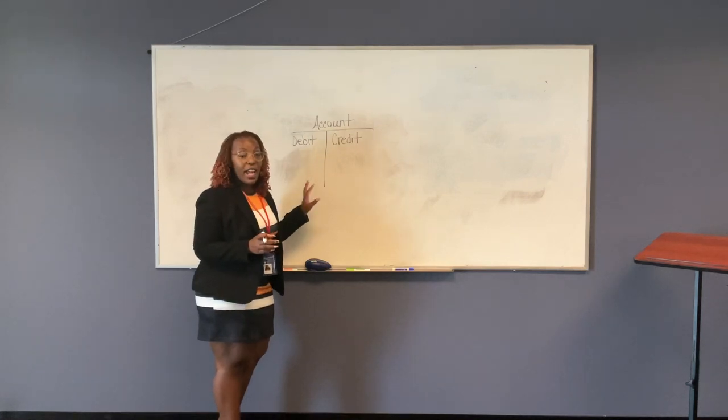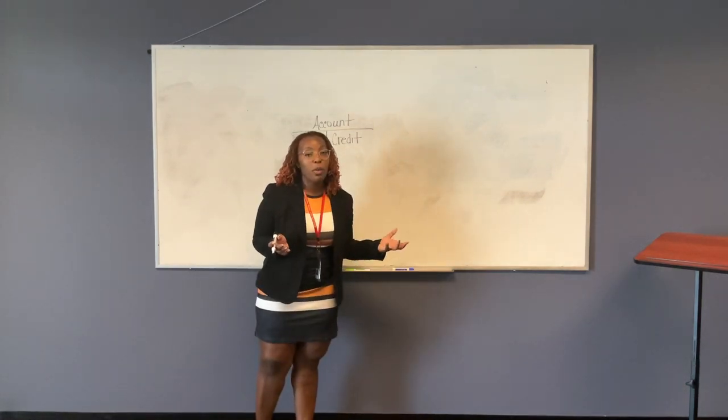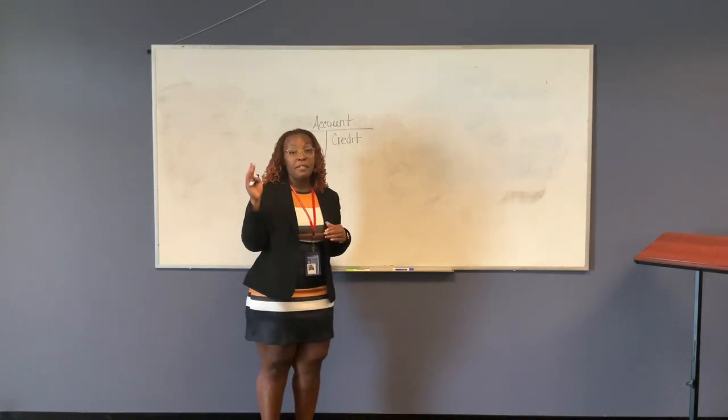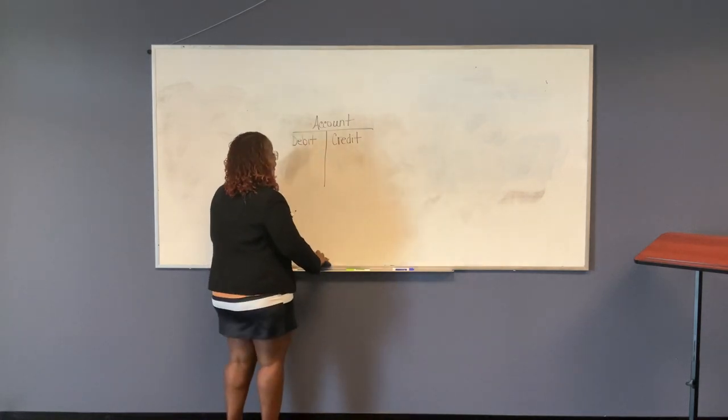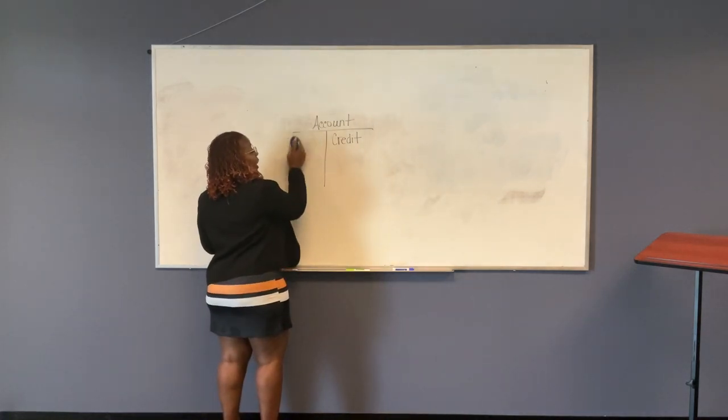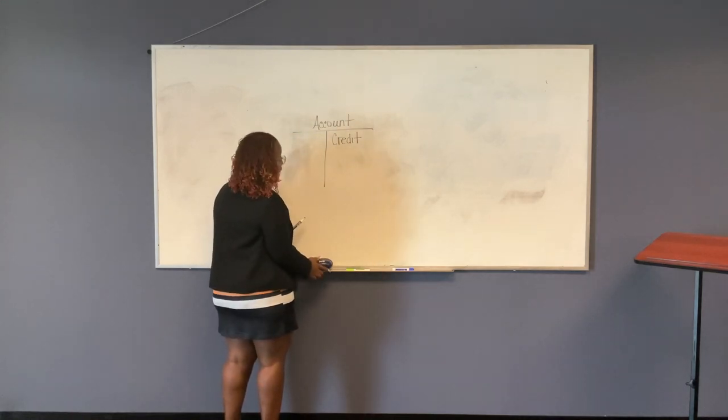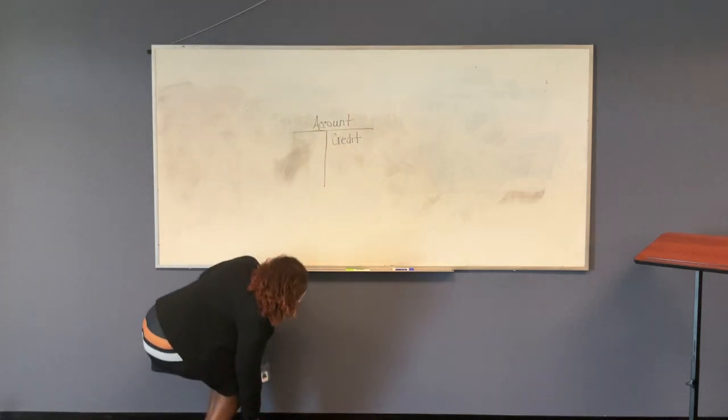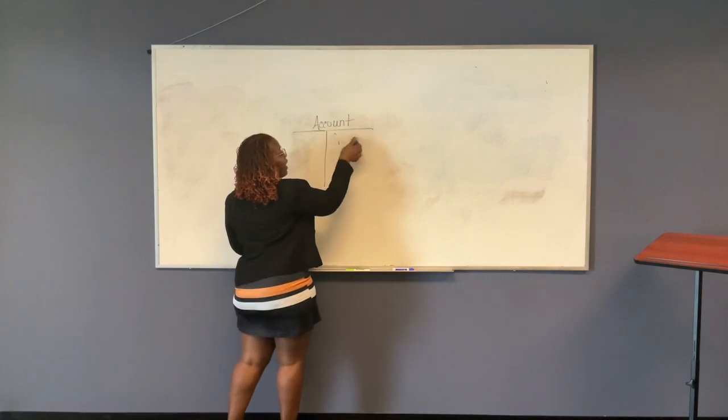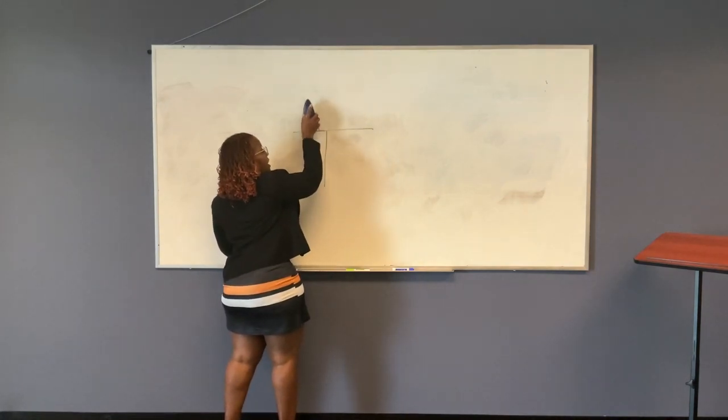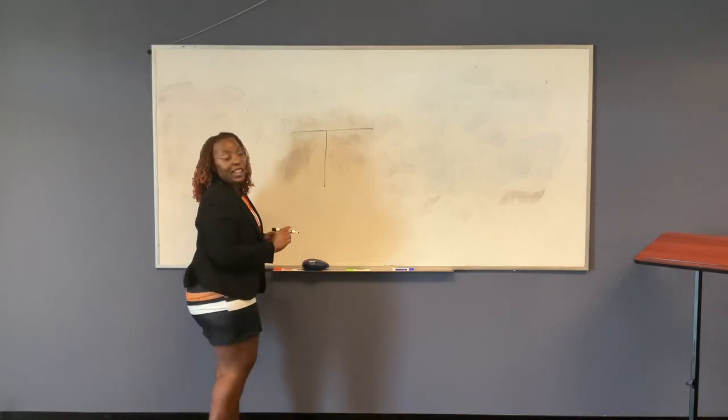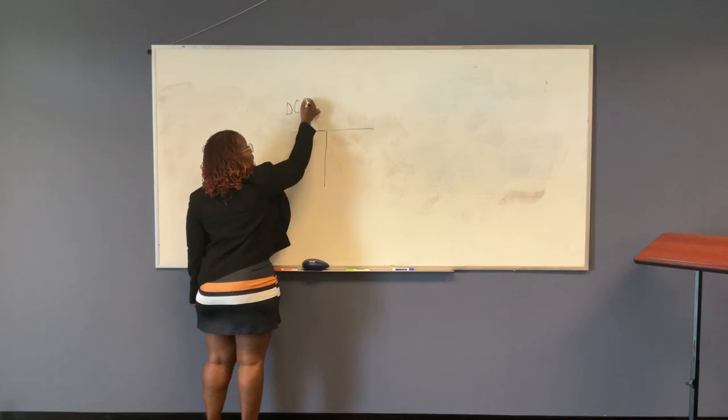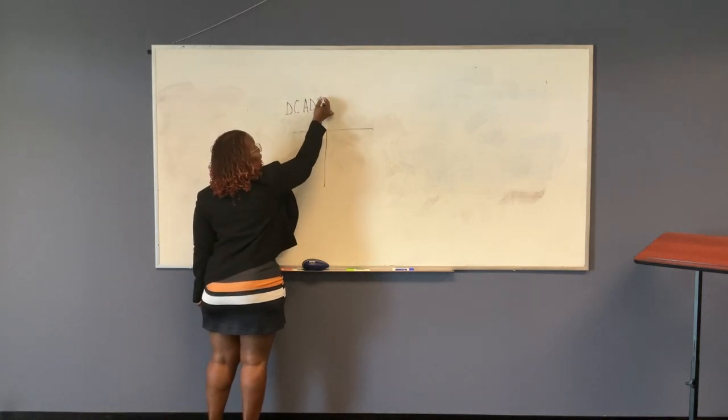Each type of account has a normal balance. What is normal? Normal is the side that makes that account increase. So go up in value. This is where Dr. Dorn, Jonathan Dorn comes in. He has an acronym. And what we would call that is D.C.A. Dorn. So we would write this up here. D.C.A. Dorn.